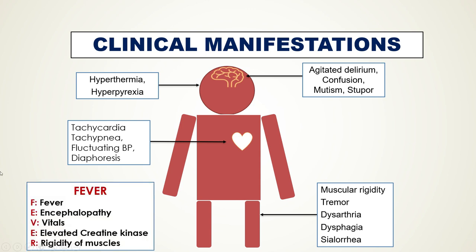A useful mnemonic to remember the clinical features of Neuroleptic Malignant Syndrome is FEVER: F stands for Fever, E for Encephalopathy, V for Vitals that are unstable, E for Elevated creatine kinase, and R for Rigidity of muscles.